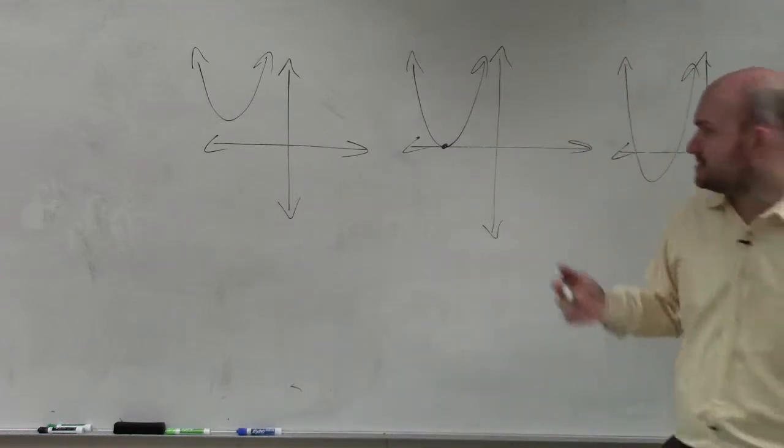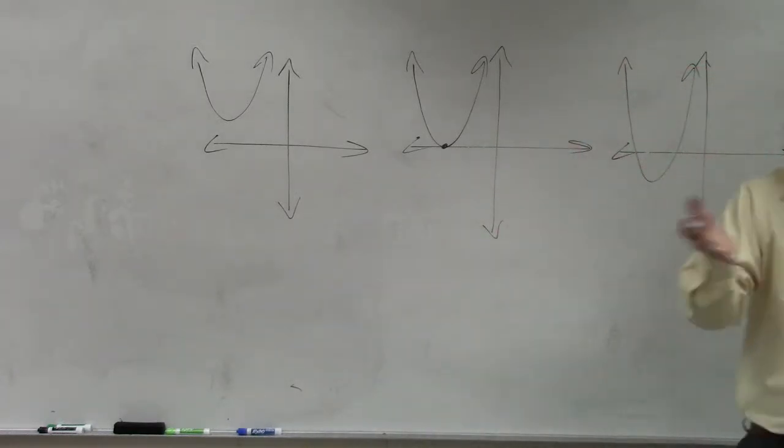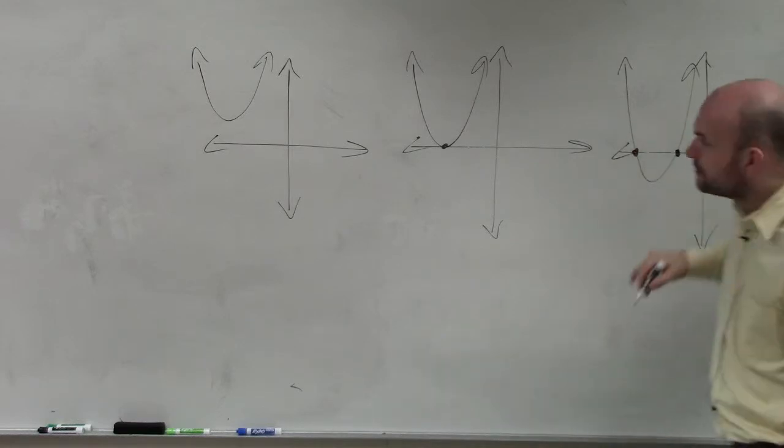If you guys remember, we talked about this, and we said at each one of these, why do we set it always equal to 0? Why do we want our quadratics to be equal to 0? Because remember, that's the value of y or f of x where it crosses.